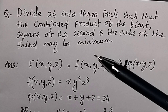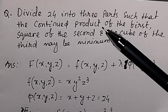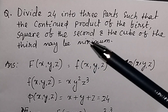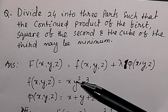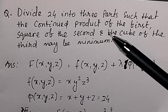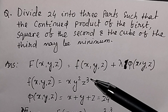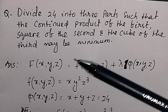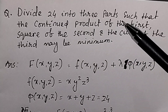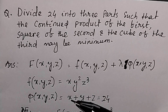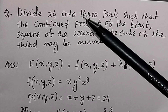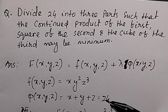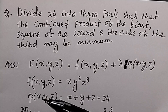What is the objective function? The objective function is the continued product of the first — suppose the first value is x — multiplied by the square of the second — if the second value is y, then y squared — and the cube of the third — if the third value is z, then z cubed. So the objective function is x·y²·z³. Since we divide 24 into 3 parts x, y, and z, the constraint is x + y + z = 24.